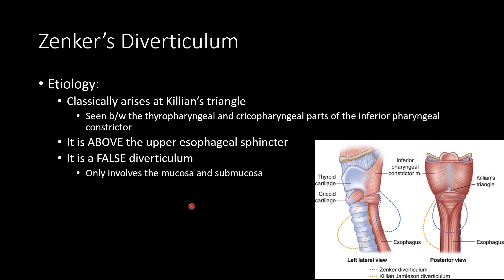Contrast this with a true diverticulum, such as Meckel's Diverticulum. With a true diverticulum, it involves all layers of the GI tract, whereas with Zenker's Diverticulum it is a false diverticulum because it's only involving the upper two layers.